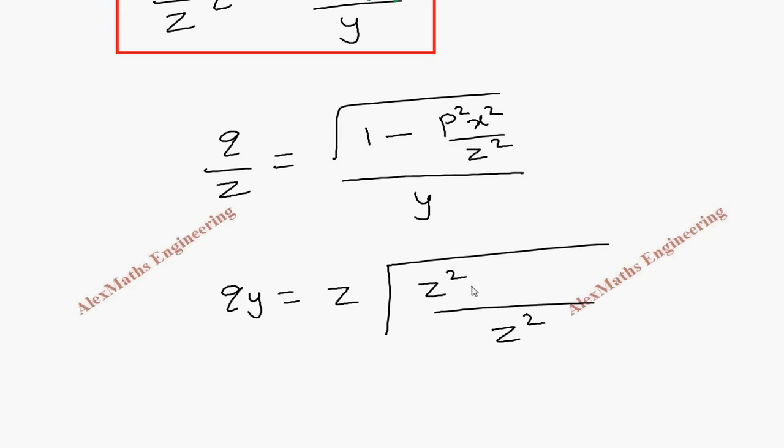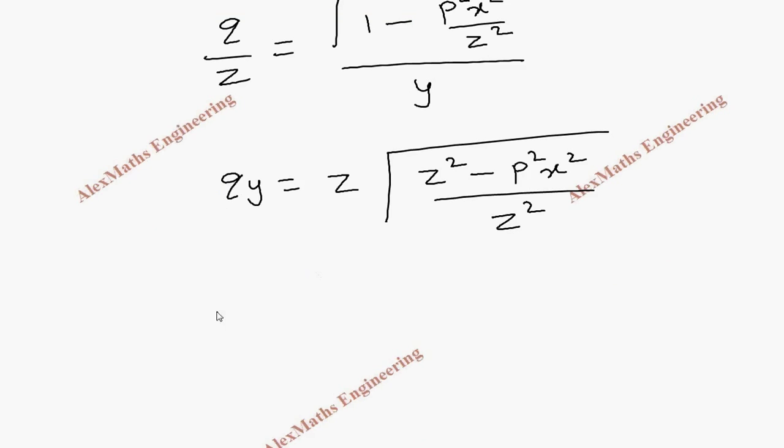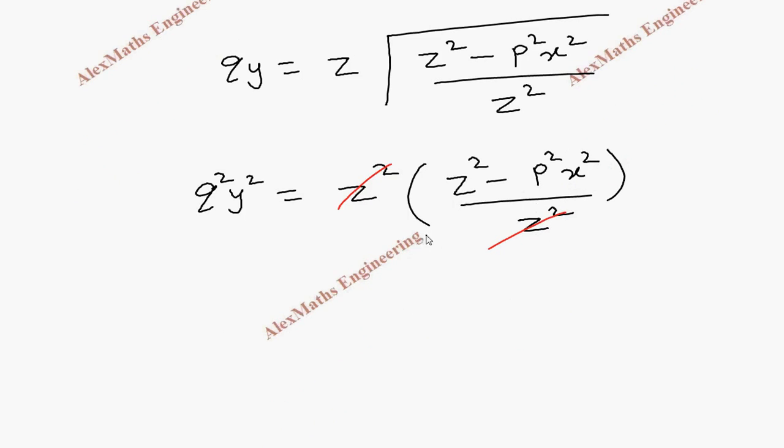Now if I square on both sides, q²y² equal to z². And this will be z² minus p²x² by z². So we can cancel z². And we can carry this term to the other side. So p²x² will become plus here, plus q²y² equal to z².